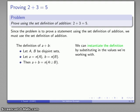So now we can take our definition as a framework for the proof by doing what's called instantiation. And what we're going to do is we're just going to substitute in the values that we're working with. The definition of A plus B, well I want to find 2 plus 3. So I'll substitute those in.